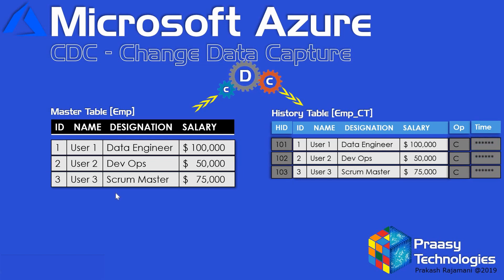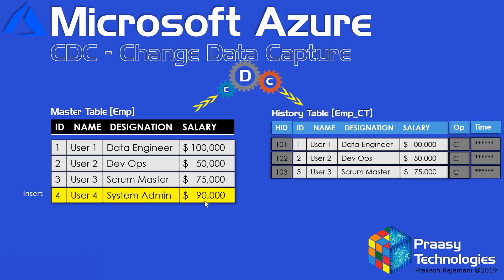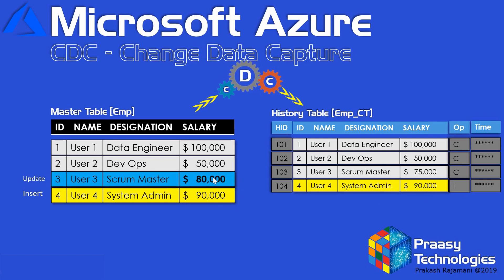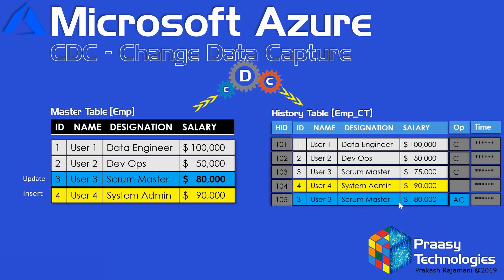Going back to the master table, here we are going to insert a new record. This new record will be added as a new record in the history table, where the operation would be 'I' which indicates a newly inserted record with its timestamp. When we update an existing record in the master table, a new record is added in the history table where the operation would be indicated accordingly.